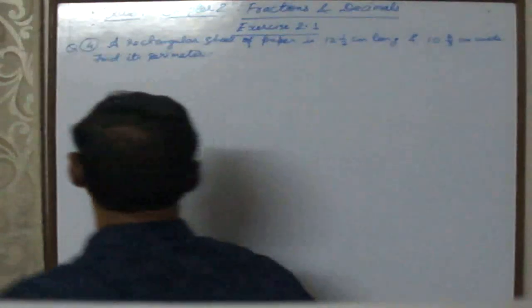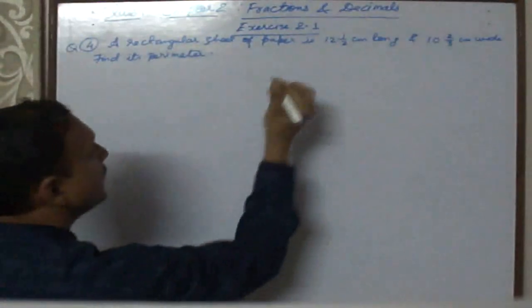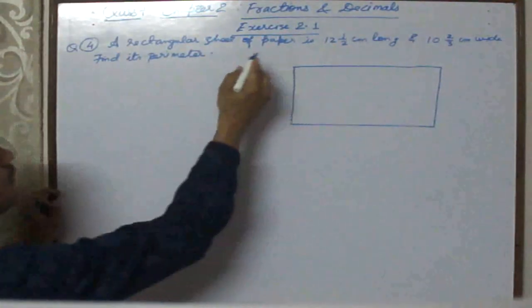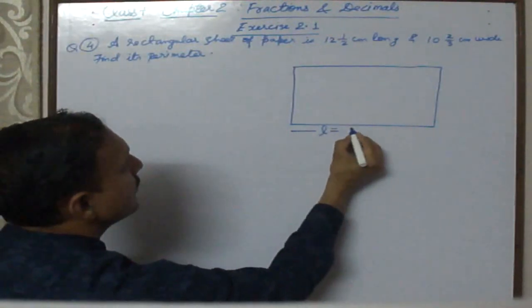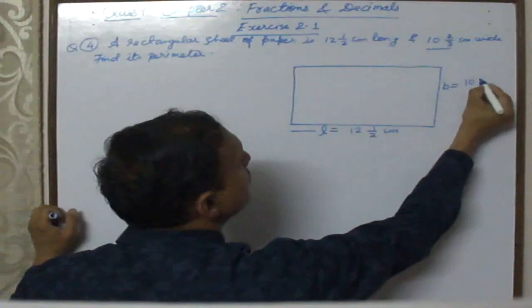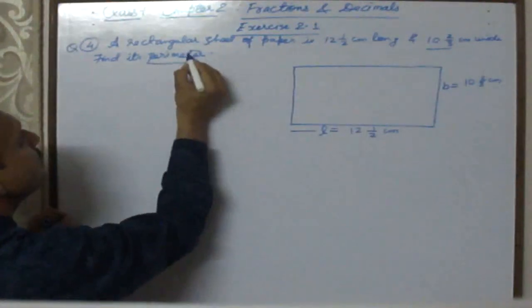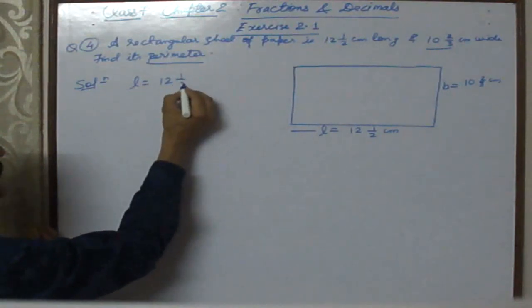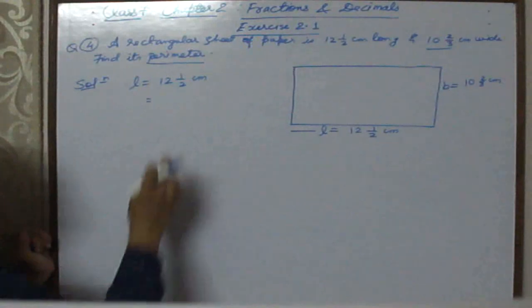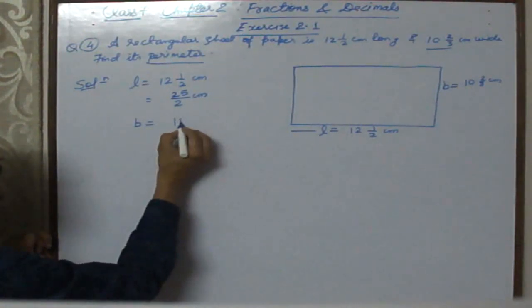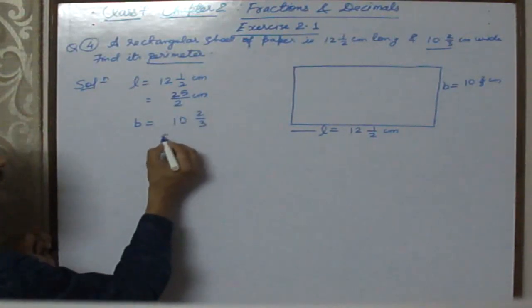Question number 4: A rectangular sheet of paper is 12 and 1 by 2 centimetres long and 10 and 2 by 3 centimetres wide. We need to find its perimeter. Converting to improper fractions: length is 25 by 2 cm and breadth is 32 by 3 cm. Perimeter of rectangle equals 2 multiplied by (length plus breadth).